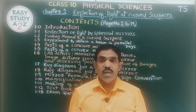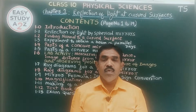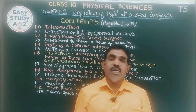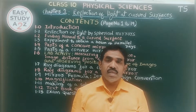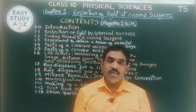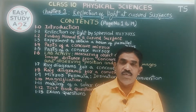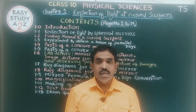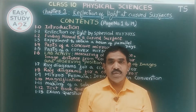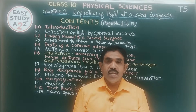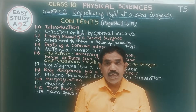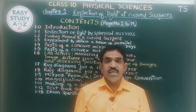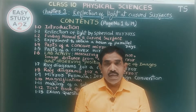Dear students, my name is Sitaram Shastri. Today we will discuss about the first chapter in Physical Sciences class 10. The name of the first chapter is reflection of light at curved surfaces. This chapter contains 19 pages of information in your textbook. I have prepared contents for this chapter — let us discuss about the contents.